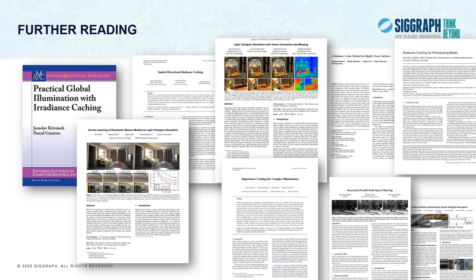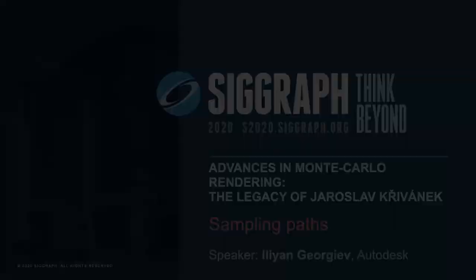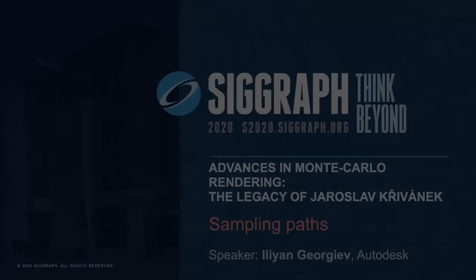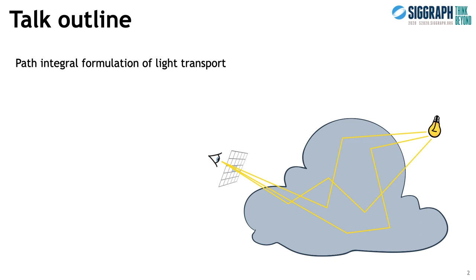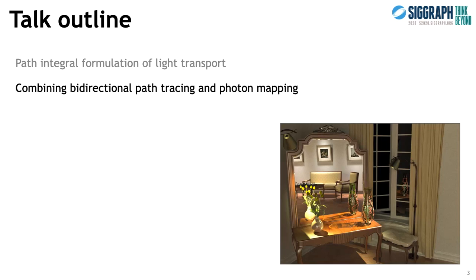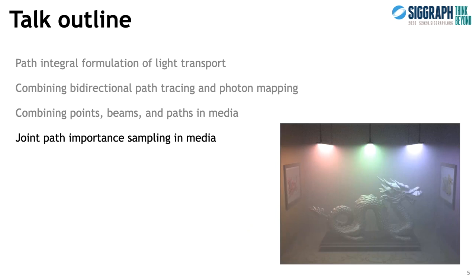I would like to thank you for your attention and leave the stage to Iliyan, who will talk about sampling paths. In this section of the course, I'll cover a few rendering methods based on the theory of path sampling. Realistic rendering methods simulate the transport of light along all possible trajectories or paths in the given scene. I'll first present a mathematical formalization of this problem and a few basic techniques for sampling paths, then show how this formulation enables the combination of two classical bidirectional rendering methods into one robust algorithm and its extension to participating media. I'll wrap up with a method that carefully coordinates the sampling of path vertices to substantially reduce noise in media.